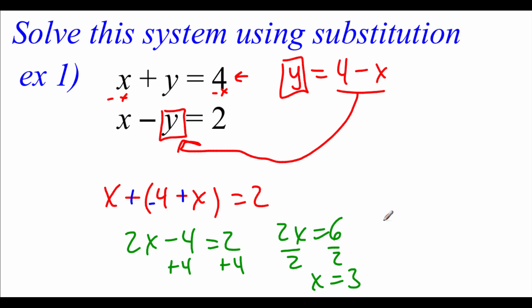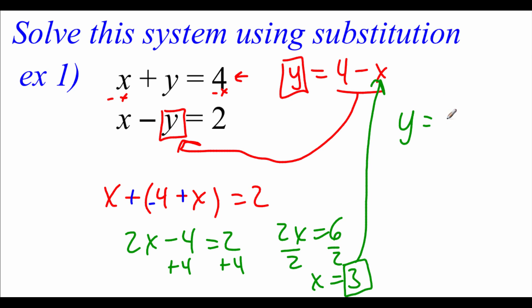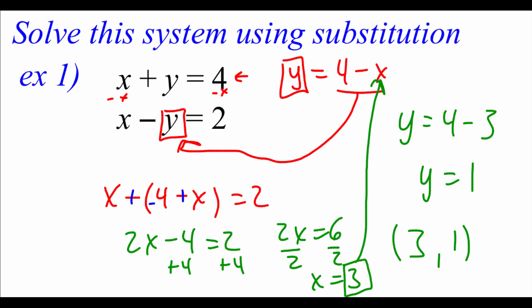We're not quite done because we need to figure out what our y variable is. We take the x value of 3 and plug it back into our equation where y equals 4 minus x. Substituting 3 for x gives y equals 4 minus 3, so y equals 1. We can write this answer as an ordered pair: x is 3, y is 1. Our answer is the point (3, 1).